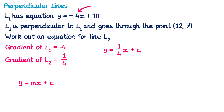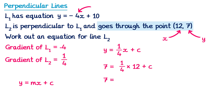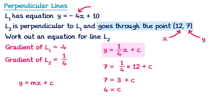We can work out c because we've been given a point on the line — it goes through the point (12, 7). In the coordinate 12, 7: 12 is an x value and 7 is a y value. We substitute these into the equation: 7 equals one quarter of 12 plus c. A quarter of 12 is 3, so we have 7 equals 3 plus c. Subtracting 3 from both sides gives 4 equals c. Now replacing c with 4, the final equation of line L2 is y equals one quarter x plus 4.